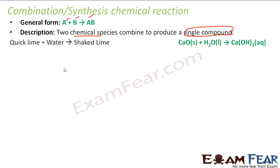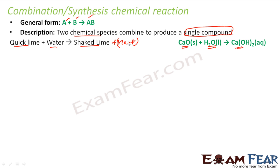For example, you have quick lime (CaO) and you add water to it — it becomes slaked lime (Ca(OH)₂). There were two elements: quick lime and water, and they combined to become slaked lime. CaO is a solid; you give water to it, it becomes Ca(OH)₂ in aqueous form, and this reaction also gives out heat — so this is an exothermic reaction.